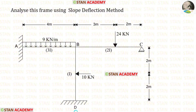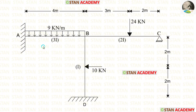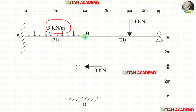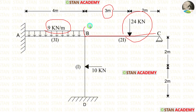Before analyzing, let us see the frame. In this frame, we have three different parts. In the span AB, we have a uniformly distributed load of 9 kN per meter acting for the full span. In the span BC, there is a point load of 24 kN acting at a distance of 3 meters from point B.